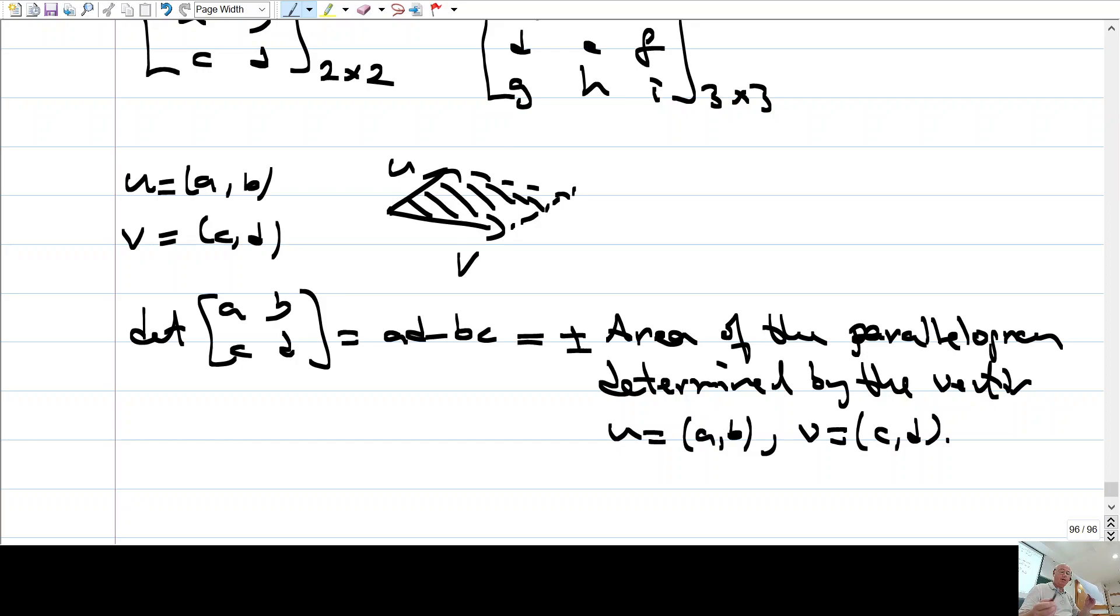Actually, but in physics, for example, area is a vector, you know, quantity. Why? You know, suppose you have some, this sheet of paper. However, it has certain area, but it is important in which directions it lies inside the space. For example, if you want to compute how much light falls onto this sheet, then you need to know what is the normal vector.